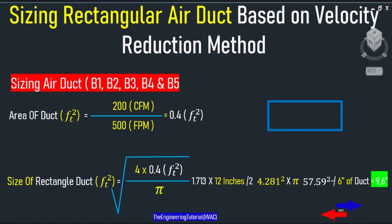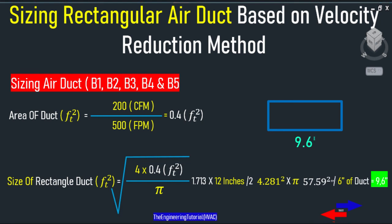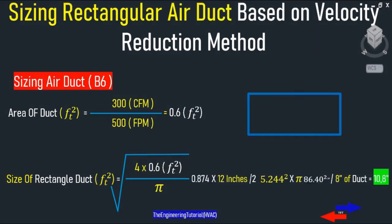For the 200 CFM branch: 200 CFM divided by the design velocity of 500 FPM, square root of 4 times the area divided by pi, times 12 inches divided by 2 squared times pi — that gives us 57.59 square inches. So 57.59 square inches divided over 6 inches height gives 9.6 inches by 6 inches.